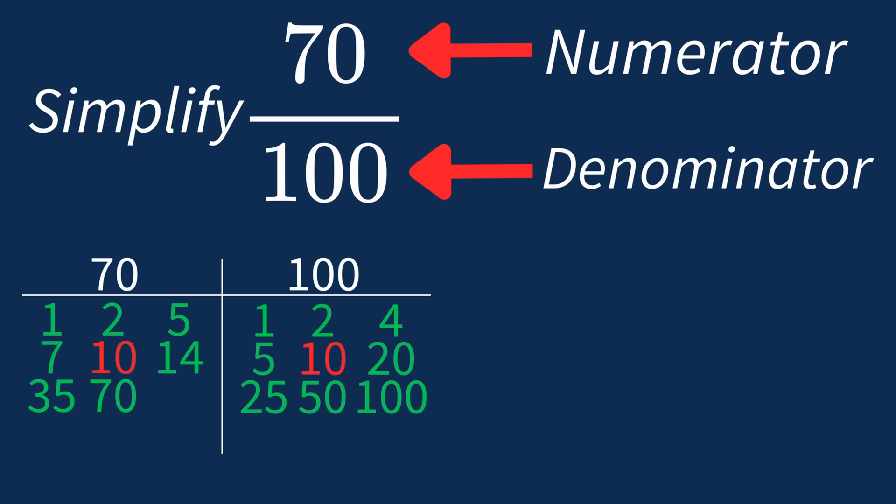This means we can divide both the numerator and denominator by 10 to simplify the fraction. Dividing the numerator 70 by 10 gives us 7. Dividing the denominator 100 by 10 gives us 10.